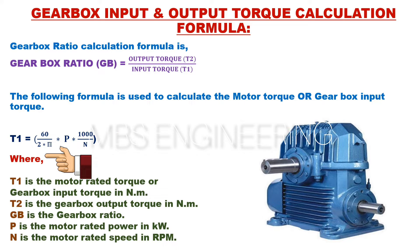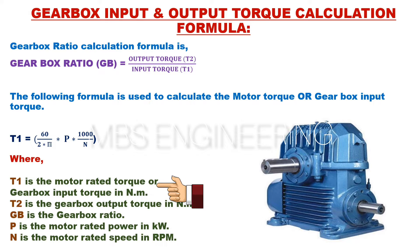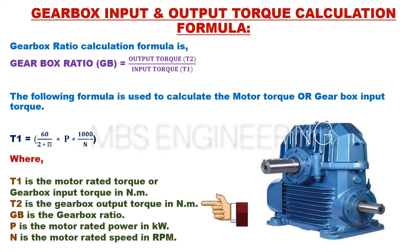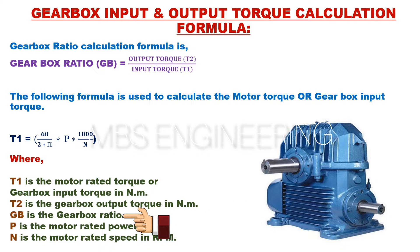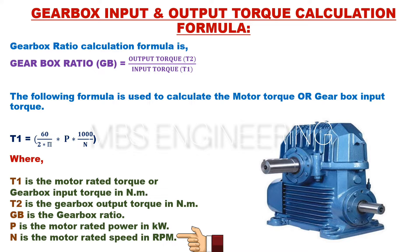Where T1 is the motor rated torque or gearbox input torque in newton meters. T2 is the gearbox output torque in newton meters. GB is the gearbox ratio. P is the motor rated power in kilowatts. N is the motor rated speed in RPM, or revolutions per minute.